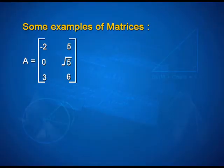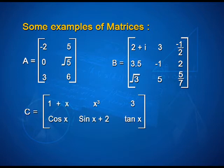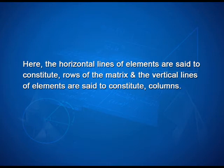Some examples of matrices are here. Matrix A: -2, 5, 0, √5, 3, 6. Matrix B: 2+i, 3, -1/2, 3.5, -1, 2√3, 5, 5/7. Matrix C can be: 1+x, x³, 3, cos x, sin x + 2, tan x. The horizontal lines of elements constitute rows of the matrix and the vertical lines of elements constitute columns.